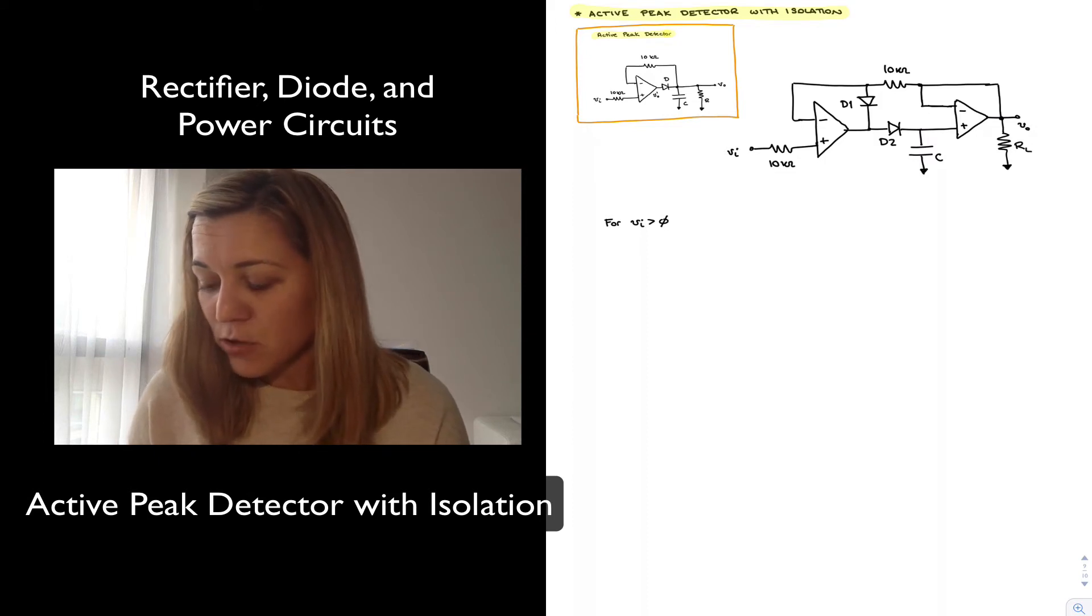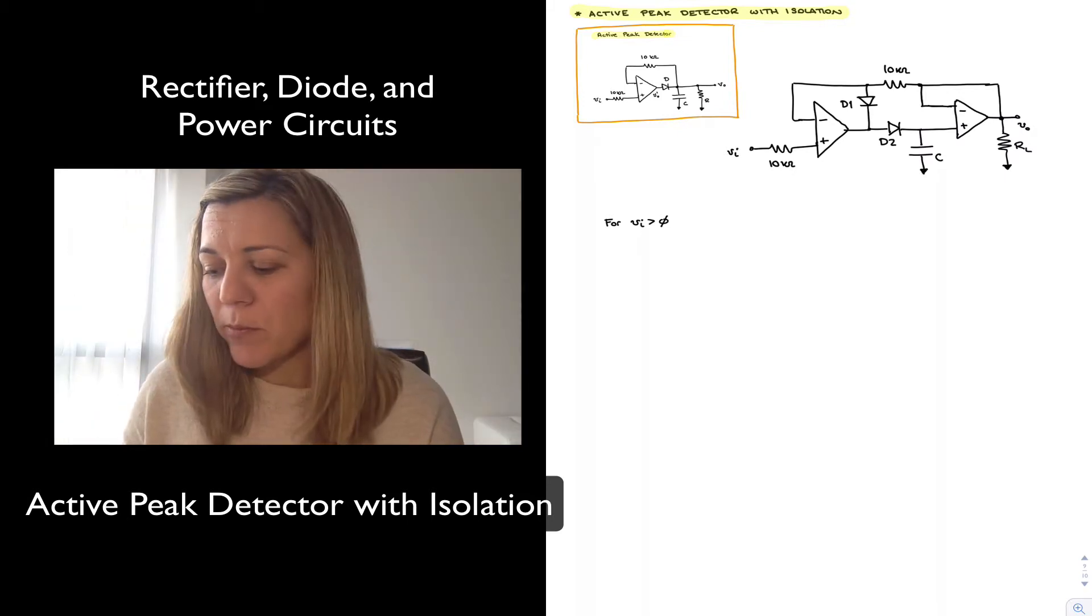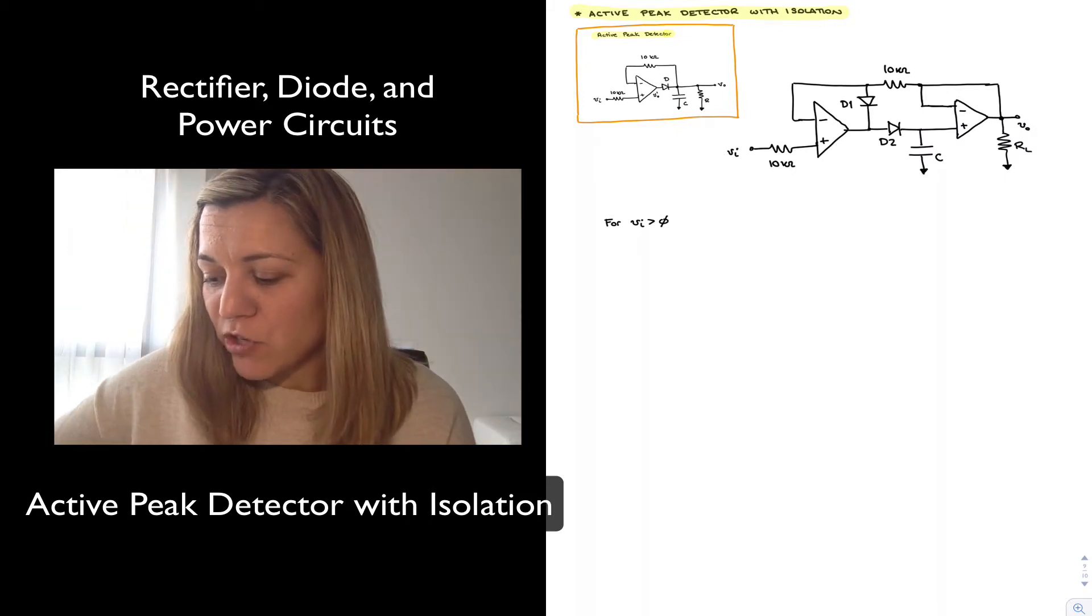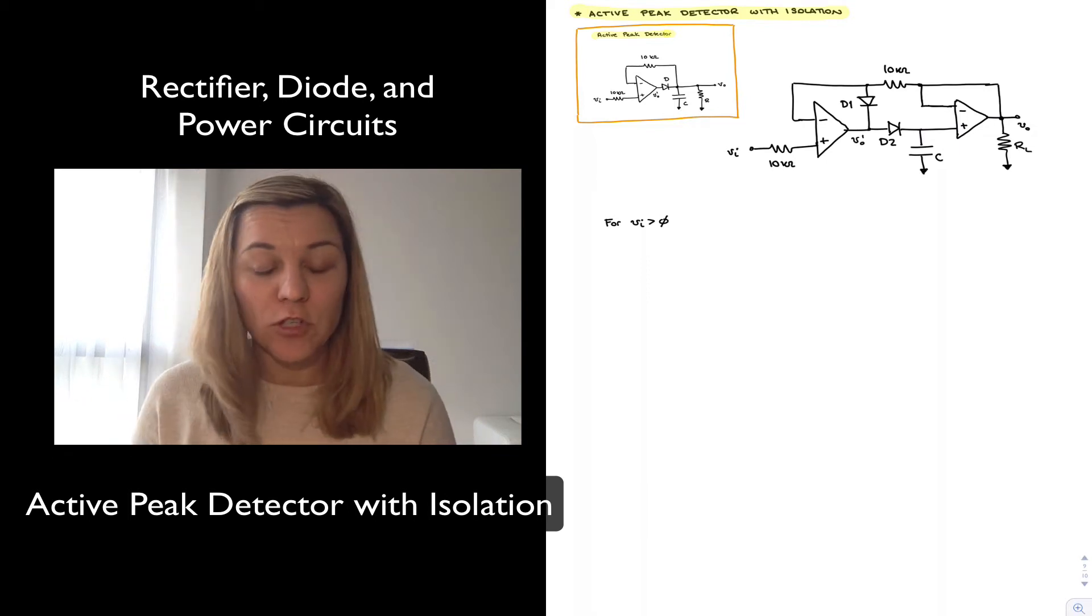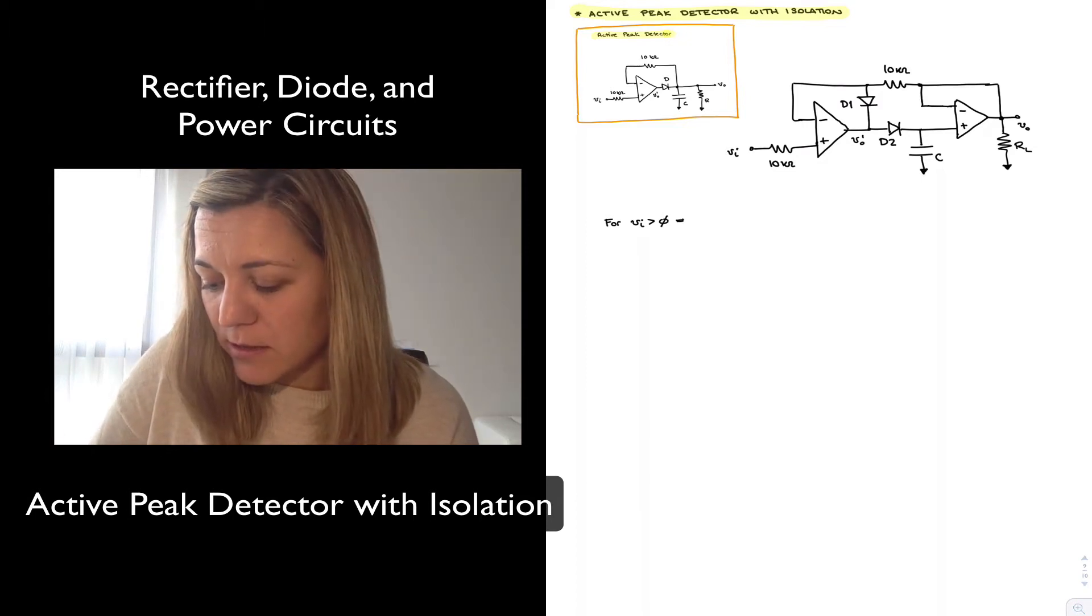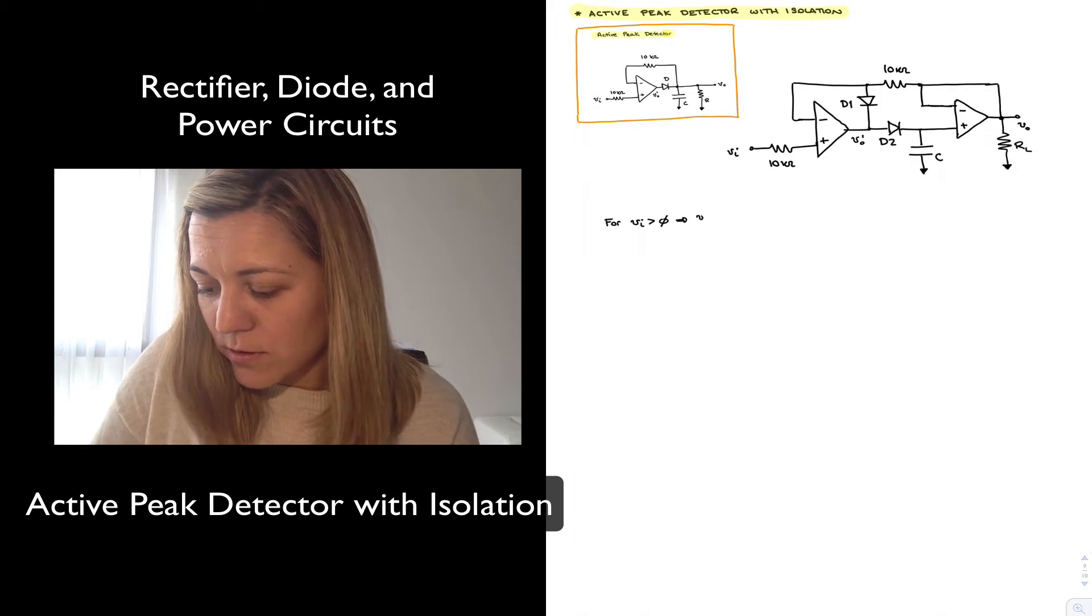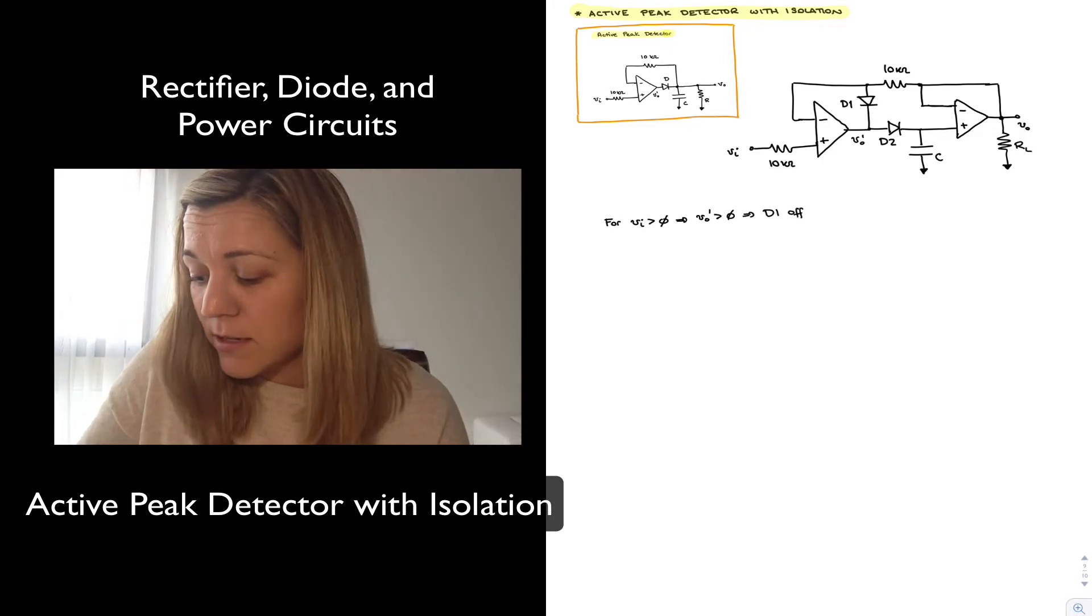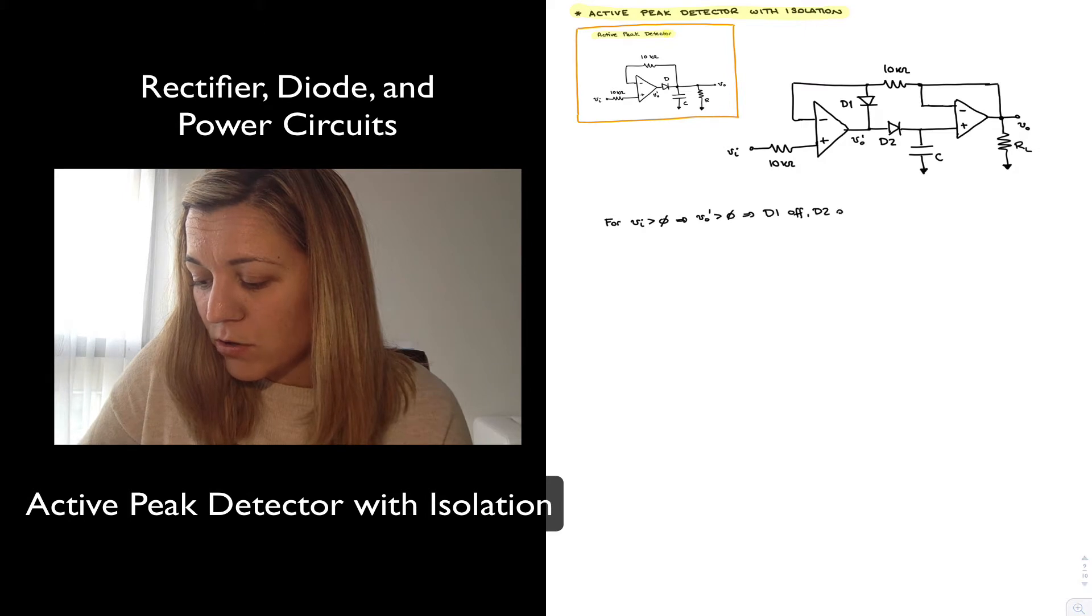So for my positive half cycle, notice that since my input signal is applied to the positive input terminal of the op-amp, the output of my op-amp, which I'm going to label Vout prime for consistency, Vout prime is going to trend towards positive voltages, which means diode D2 is going to be forward biased, and diode D1 is going to be reverse biased. And so D1 is what we have referred to as off reverse biased, and D2 is the one that's on or forward biased.